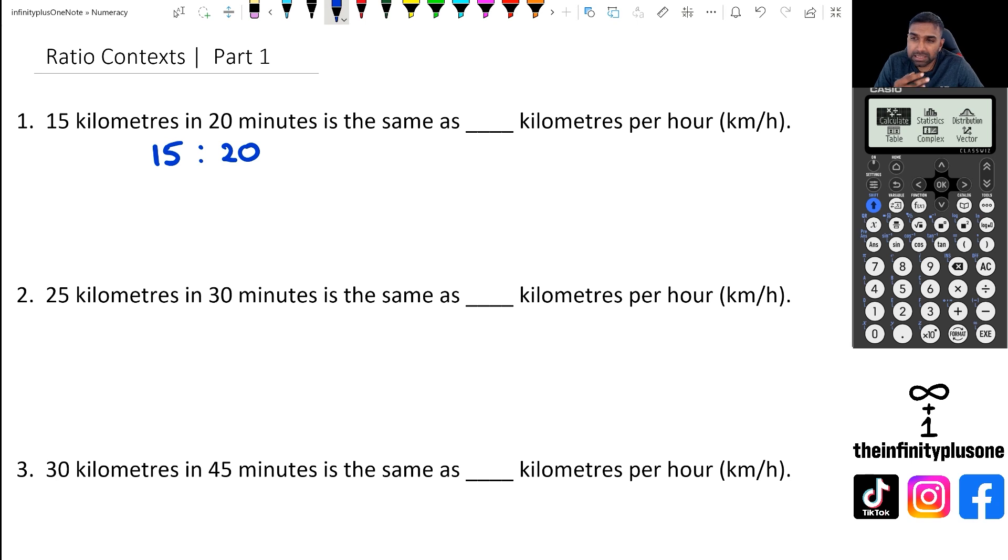So what that means is for every 15 kilometers, it's going to take 20 minutes. Now I want to figure out how many kilometers is covered in 60 minutes. So I am looking for what is this question mark going to be for 60 minutes. And the best way to do this, I mean there are so many ways to do this, you could actually have a fraction equals another fraction. And I'm going to show you all the three different methods, and then you can pick whichever method you prefer to go with.